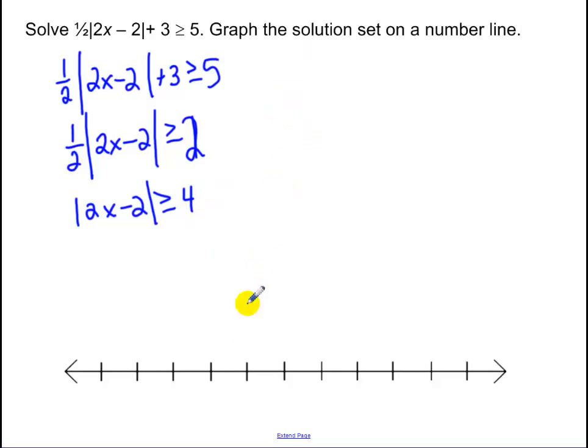Now, we have two separate inequalities. Remember, look at what this symbol is. It's a greater than sign, so it becomes an 'or' statement. So, 2x minus 2 greater than or equal to 4, or 2x minus 2. Switch your sign. Make the 4 negative.